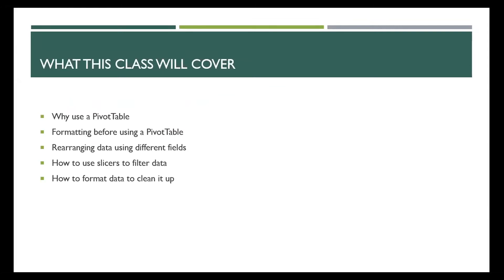So what will this class cover? First we'll talk about why we want to use a pivot table and what the big deal is about them. Then we'll talk about how to format your data before converting it into a pivot table. Next, we'll talk about how to rearrange data using fields, how to use filters, and how to use slicers as an alternative to filters. And last, we'll talk about how to format data to make it look nicer.